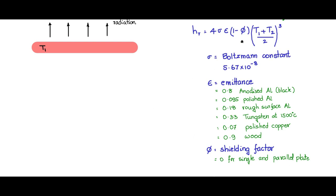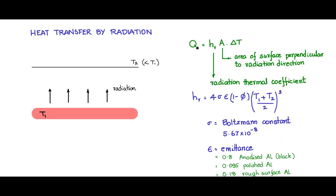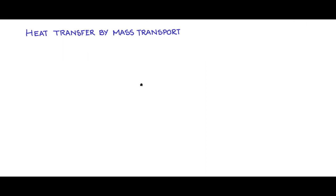This is the relationship that you can use for finding out the heat received by radiation. The fourth heat transfer mechanism is heat transfer by mass transport.